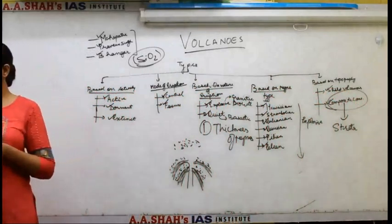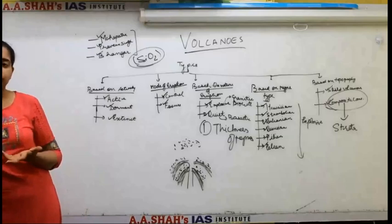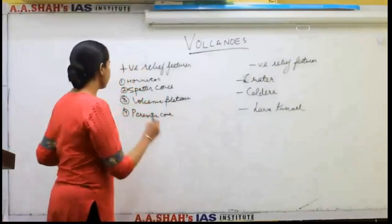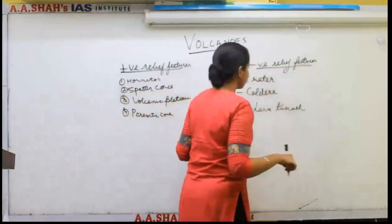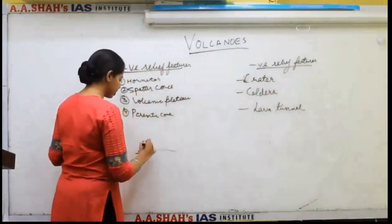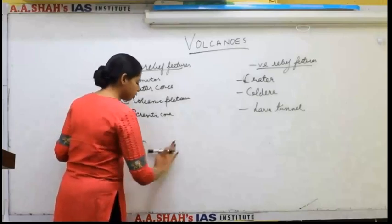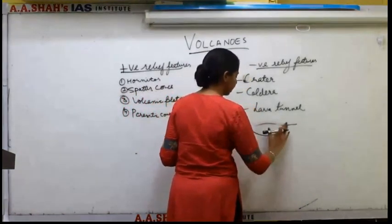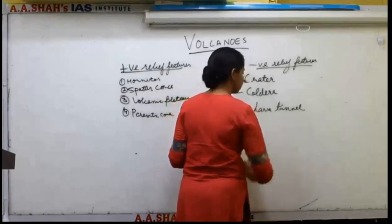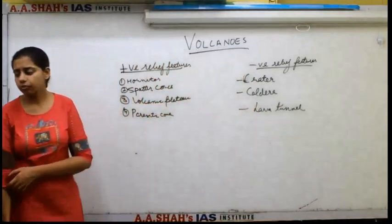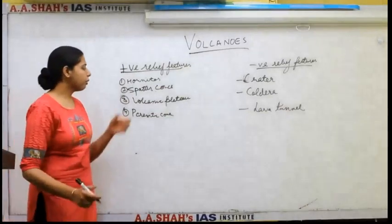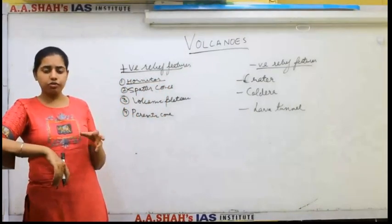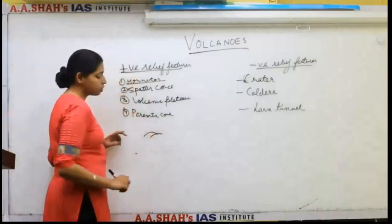Volcanic eruptions result in various types of features — positive relief features and negative relief features. Positive relief features are those which are built up: mountains, plateaus, etc. Negative relief features are depressions created because of volcanic eruptions. Among positive relief features, the first is known as hornitos — these are cones of very small lava flows.